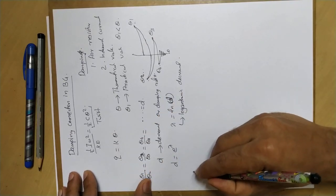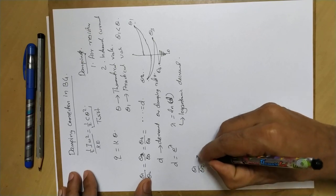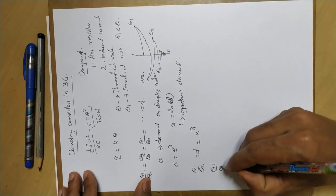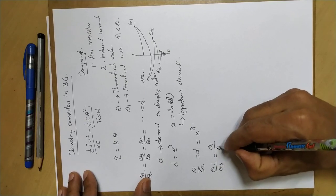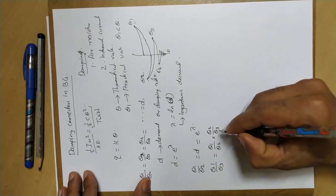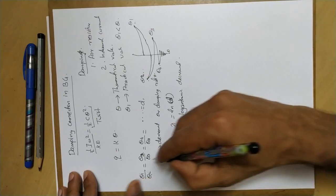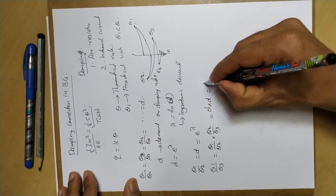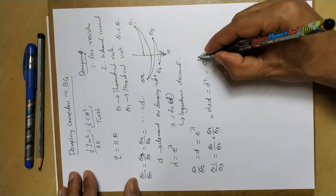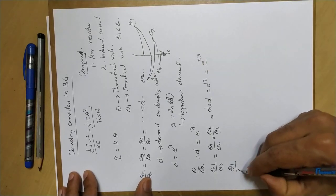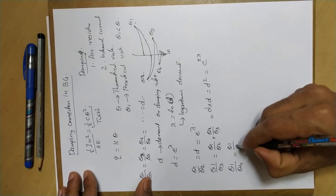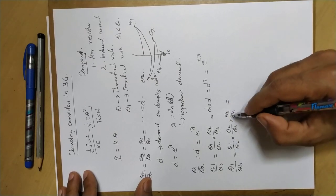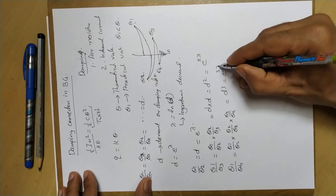We have theta1 by theta2 equal to D, that is e raised to lambda. Now theta1 by theta3 can be written as theta1 by theta2 into theta2 by theta3, which equals D into D equals D squared equals e raised to 2 lambda. Similarly, theta1 by theta4 equals D cubed equals e raised to 3 lambda, and so on.